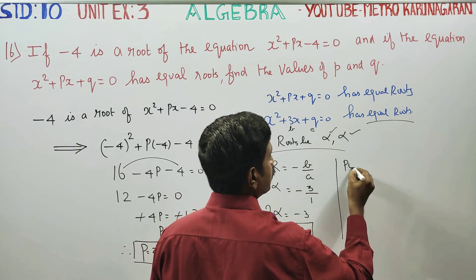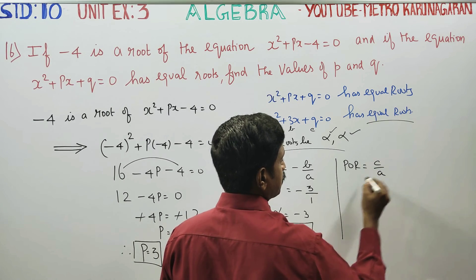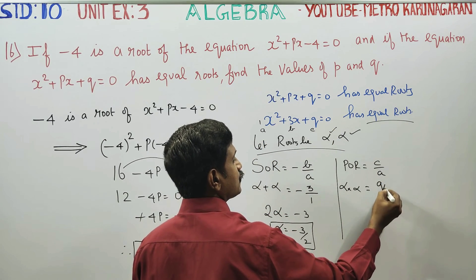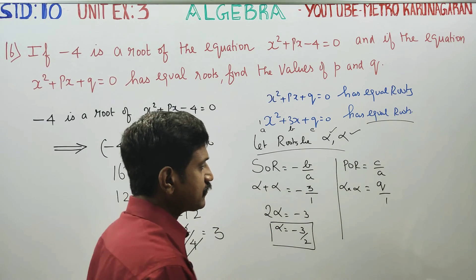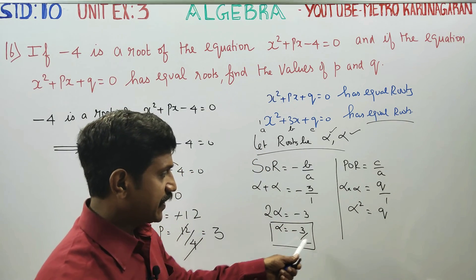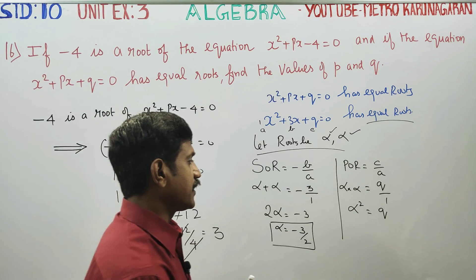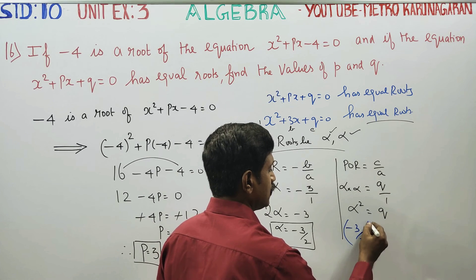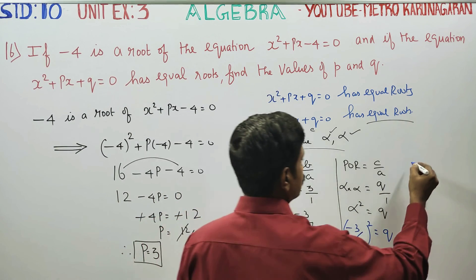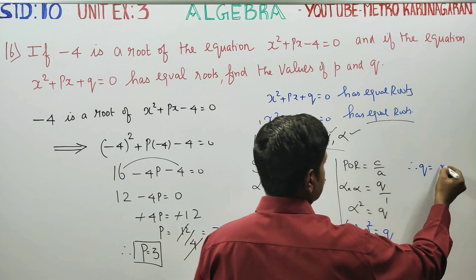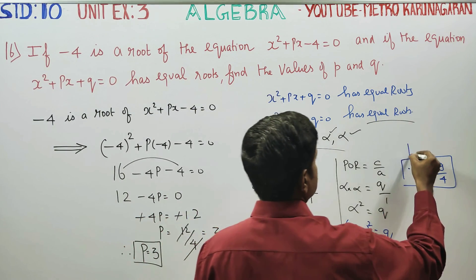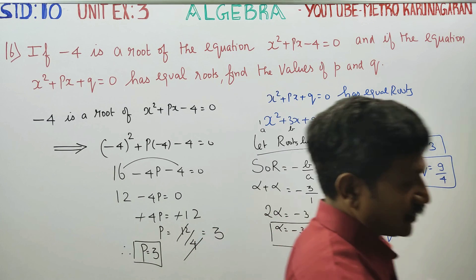Product of the roots: alpha times alpha equals c by a. So alpha squared equals q over 1, meaning q equals alpha squared. Since alpha equals minus 3 by 2, q equals 9 by 4. Therefore, the final answer is p equals 3 and q equals 9 by 4.